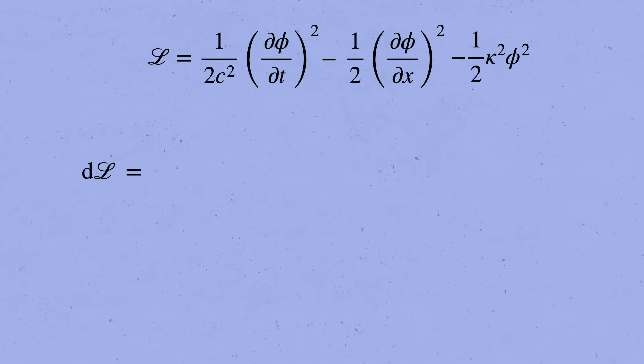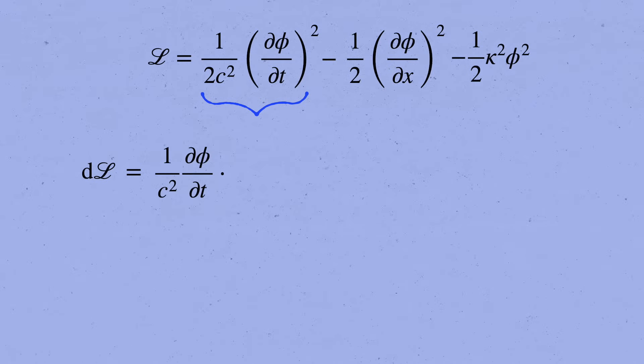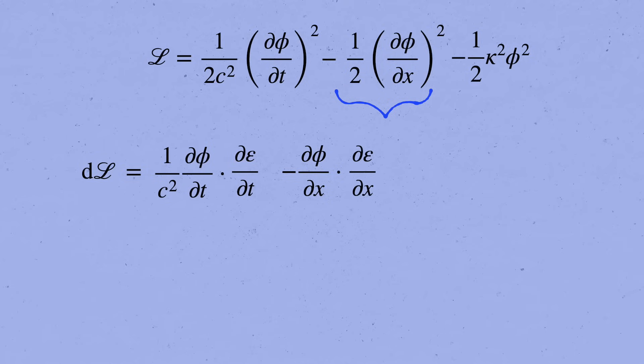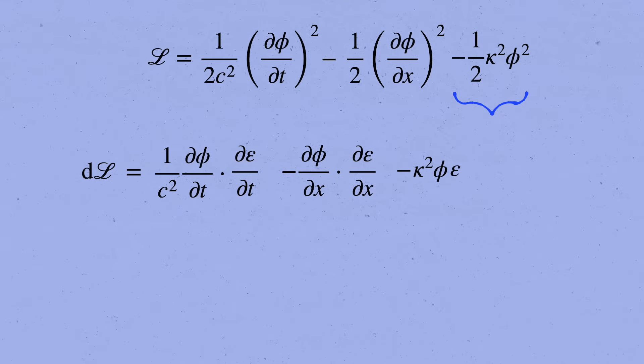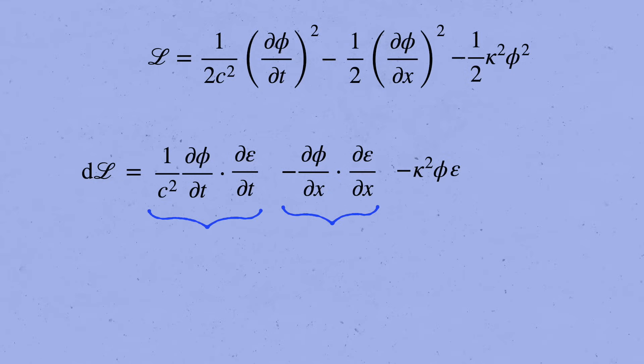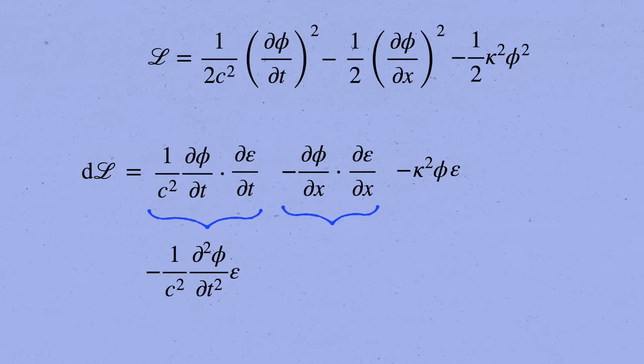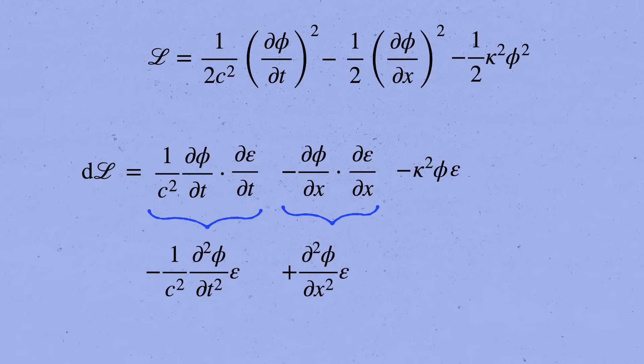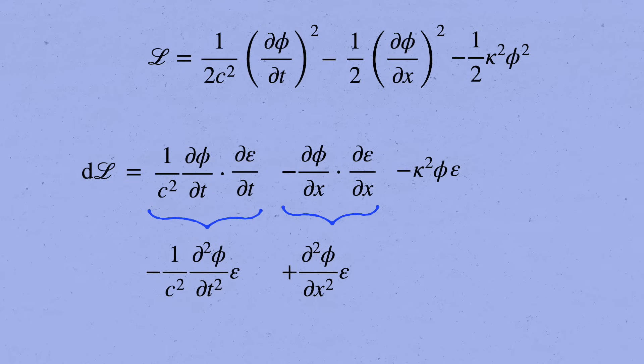Let's first work out the change in curly L. In the first term, we take the derivative and get 1 over c squared times d phi by dt, and then we multiply that by the change in d phi by dt, which is d epsilon by dt. Likewise, in the second term, we take the derivative and get d phi by dx, and then we multiply that by d epsilon by dx. In the last term, the derivative is kappa squared phi, which we multiply by the change in phi, which is epsilon. Just like before, we'll integrate by parts, only now we have to do it twice for the first two terms. We get minus 1 over c squared times the second derivative of phi with respect to time times epsilon, and then plus the second derivative with respect to x times epsilon. They'll also be total derivative terms that vanish again after we integrate over space-time to get the change in the action, so I won't bother writing those here.